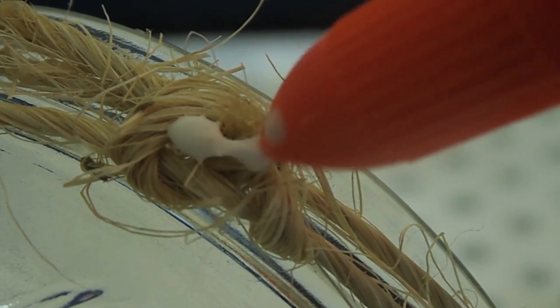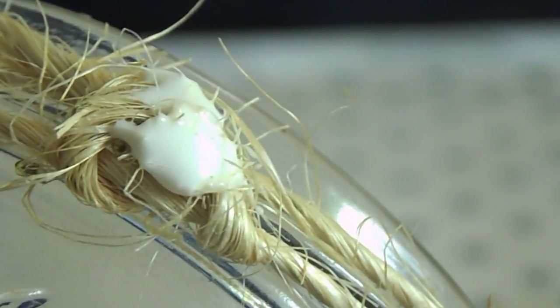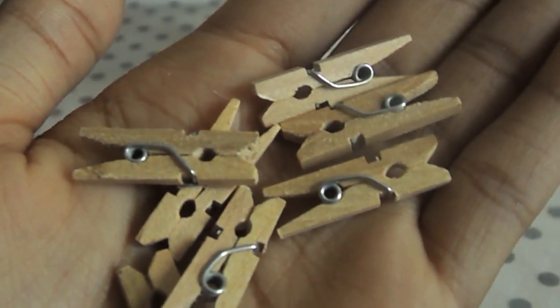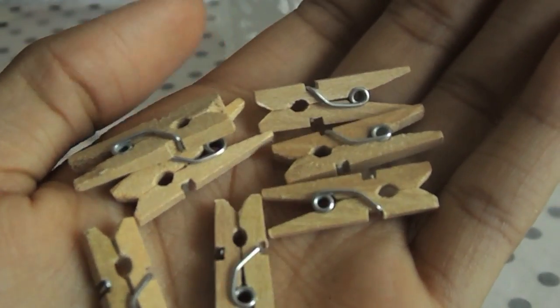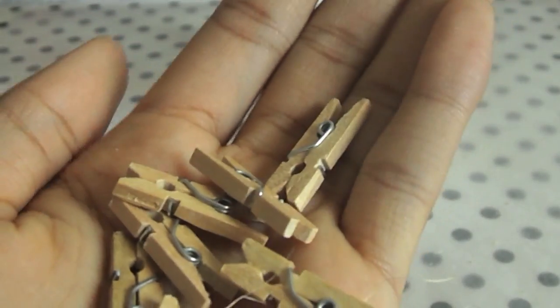And just put some glue in the knot you made just so it won't come apart later. So now this stuff is optional but I thought it was really adorable and I found these little miniature clothespins in Hobby Lobby like in the section where you get popsicle sticks and stuff so I thought those were really really cute.